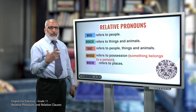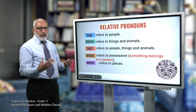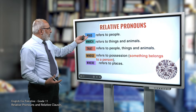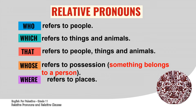Let's now see some of the relative pronouns in your books. Number one is the relative pronoun 'who.' Who refers to people. 'Which' refers to things and animals. 'That' refers to people, things, and animals — so we can use 'that' instead of 'who' or 'which.'